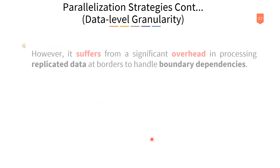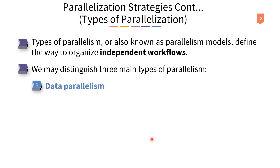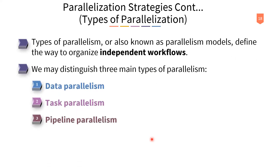Now, we have three different types of parallelization. These types of parallelization are also known as parallelism models, which define the way to organize independent workflows. We have three types: data parallelism, task parallelism, and pipeline parallelism.